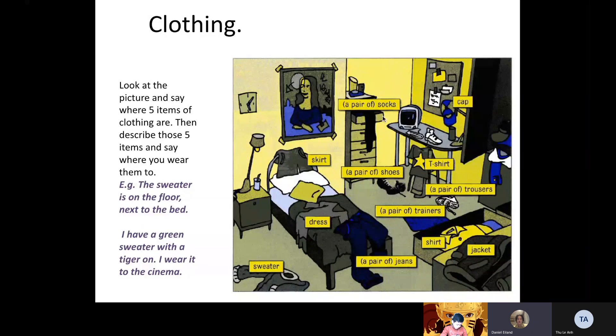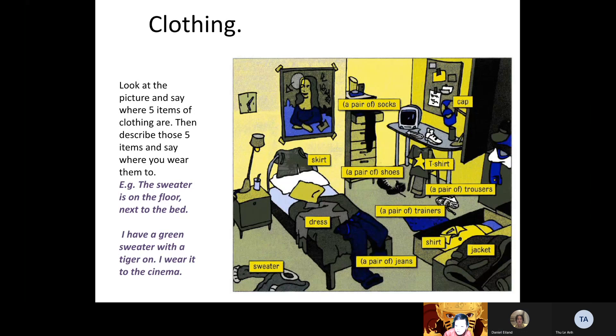And where are the socks in this picture? Where are the socks? On the cupboard. On the cupboard, excellent, very good vocabulary. And do you have socks? Yes, I have. Okay, what color are your socks? Yes. Black. Black. And where do you wear socks? I wear... at home. At home.